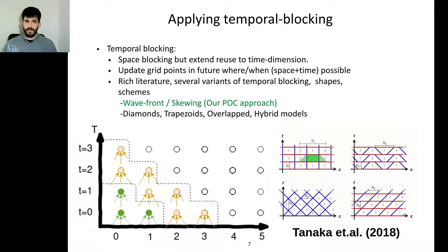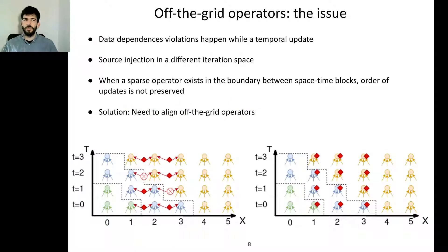We update grid points in the future when this is possible depending on space and time constraints. There has been rich literature for that, several variants have been implemented ranging from simple schemes like the wavefront, the skewing approach that we're going to use as a proof of concept, and more exotic schemes like diamonds, trapezoids, overlapping hybrid models.